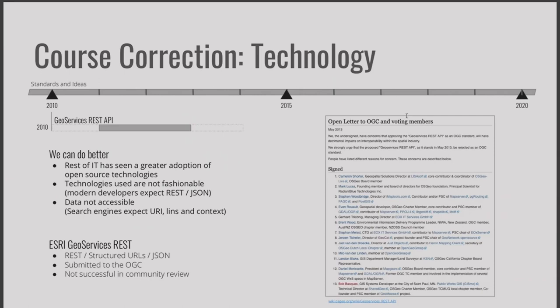The data that we publish is not accessible to the rest of the web, which expects URIs and links and a little bit more context. There was a proposal done by ESRI — the ESRI GeoServices REST API — back in 2010. Members of this community — OSGeo, OGC, and other groups — rejected this proposal for a wide number of reasons. On the OSGeo website, we can see a long list of signatures of people who did not want to see this particular technology adopted.